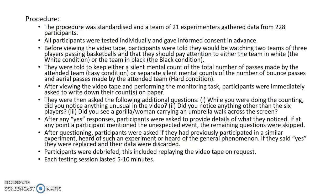The procedure was standardised and a team of 21 experimenters gathered data from 228 participants. All participants were tested individually and gave informed consent in advance, which is good for ethics. Before viewing the videotape, participants were told they would be watching two teams of three players passing basketballs, and that they should pay attention to either the white team or the black team. They were told to keep either a silent mental count of the total number of passes — the easy condition — or separate silent mental counts of bounce and aerial passes — the hard condition.